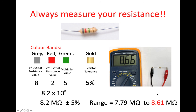Now, when we actually measured this resistor, we got 8.66 megaohms — so it's a little bit outside that 5% range. But it's quite a large resistance, so there's quite a span there — nearly a megaohm between its expected minimum and maximum. It is always important to measure resistor values before you use them so you know exactly what resistance you're using.